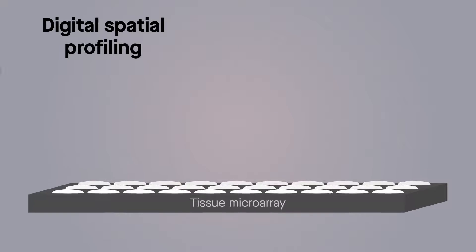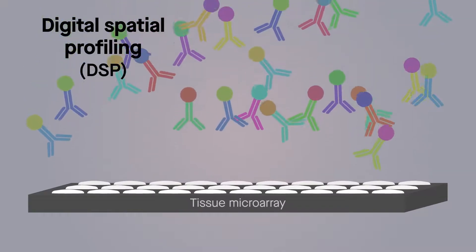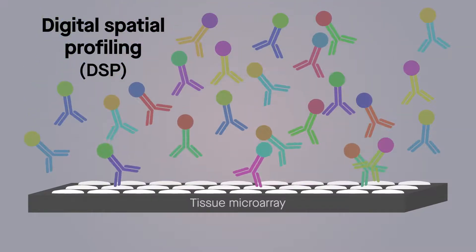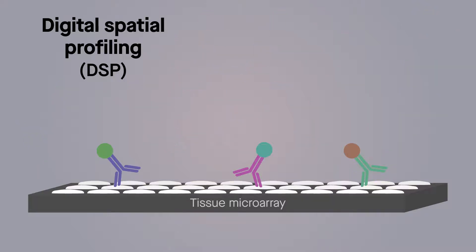Digital Spatial Profiling, or DSP, works by flooding tissue samples with up to dozens of different antibodies, each targeting a unique cellular compartment or function. Attached to each antibody is a matching molecular probe that is cleaved when zapped with an ultraviolet laser.